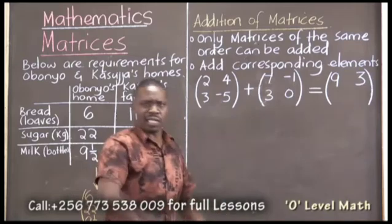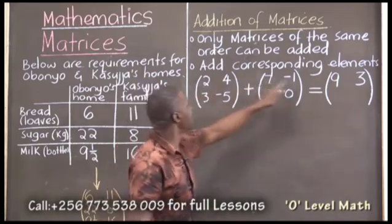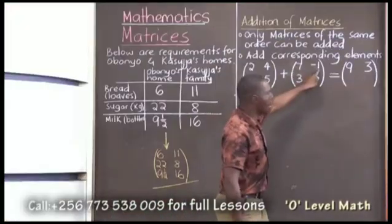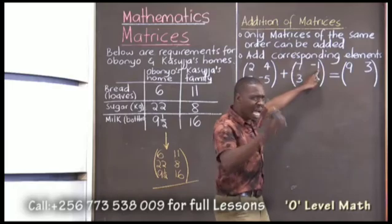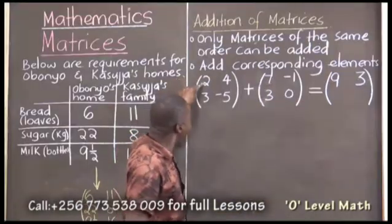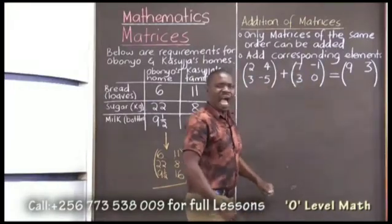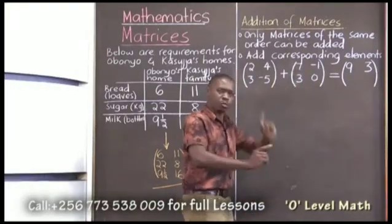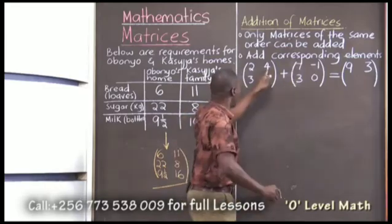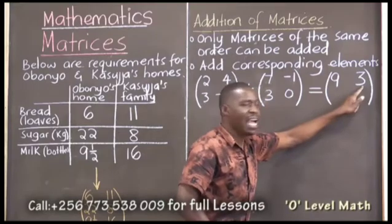Don't forget — someone might be wanting to add a 2 plus a negative 1. Are they corresponding? No. Add the first one up plus the first one up to give you the first answer up. The second one up plus the second number up to give you the second answer up.